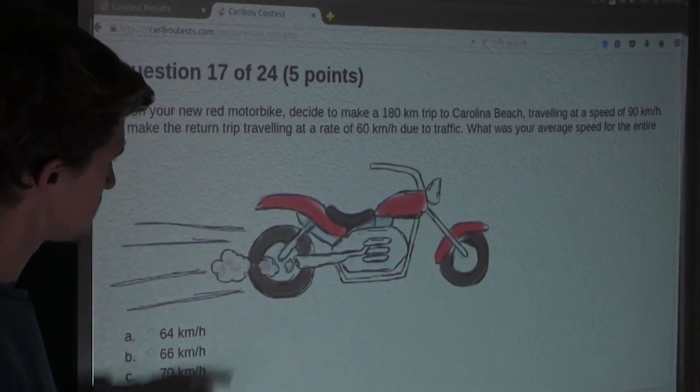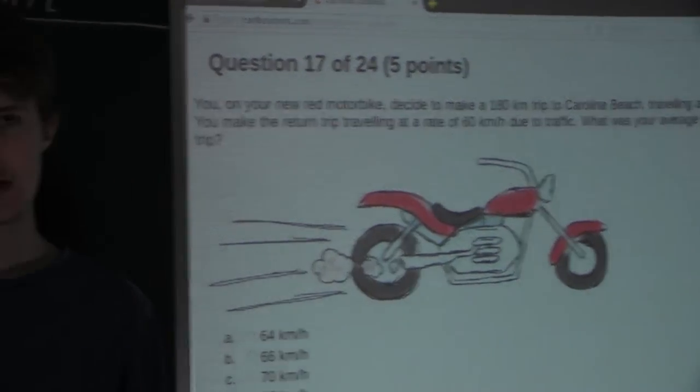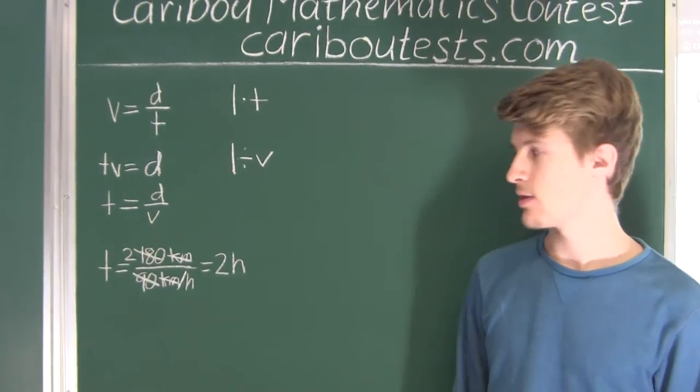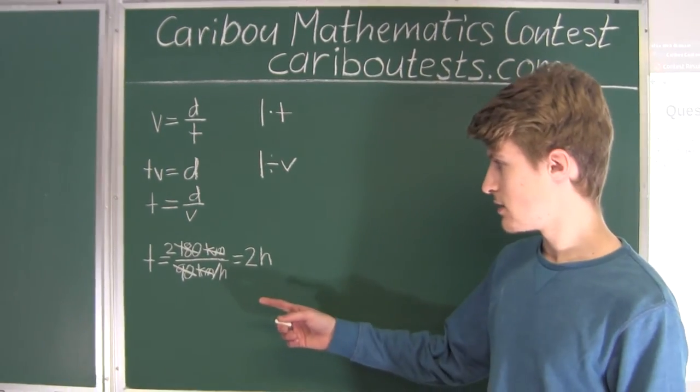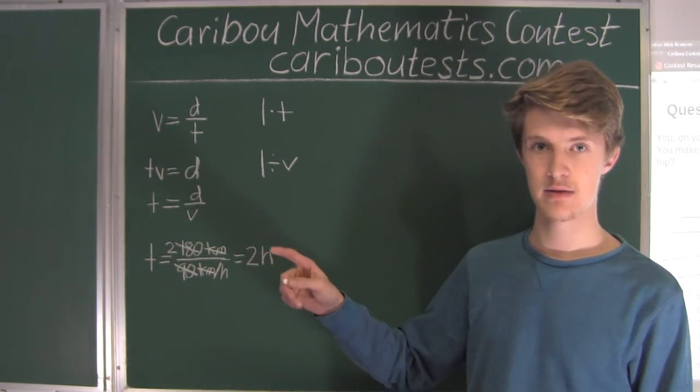Finally, it says what was your average speed for the entire trip? Well, if we want to find the average speed for the entire trip, we would have the velocity which is equal to the whole distance divided by the total time that it took.